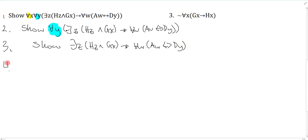At this point, I have a conditional as the main connective, so I just continue to do show line breakdown using the conditional, which means I get there exists a z, Hz and Gx, and that's assume CD, and I get to show the consequent: show for all w, Aw bi-conditional Dy.